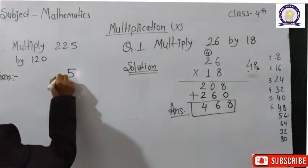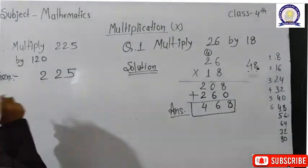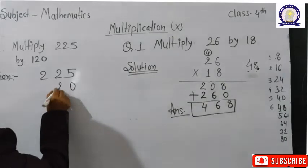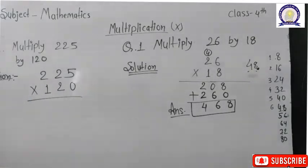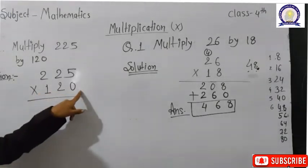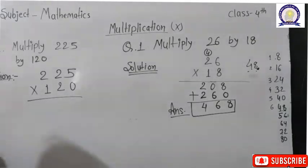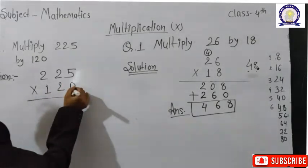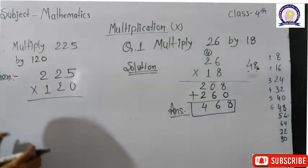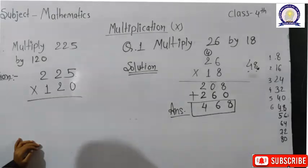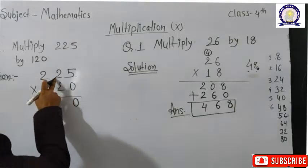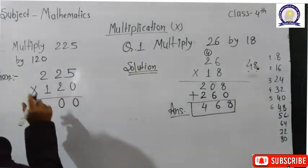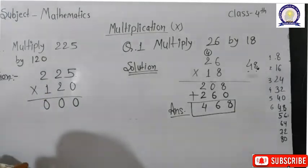Next question — I will now tell you a new question. The next question will be a three-digit one. Question number 2: multiply 225 by 120. Okay students, let's solve this.